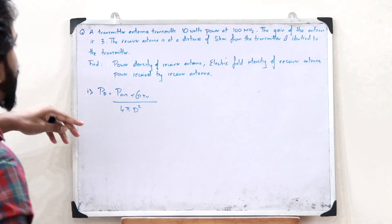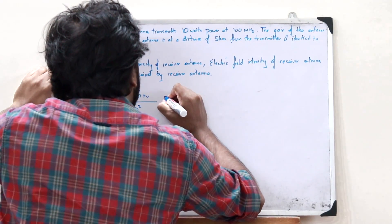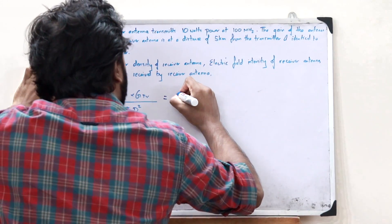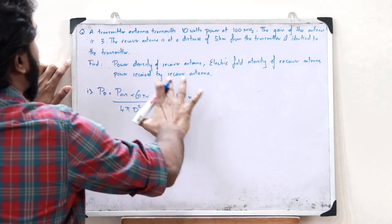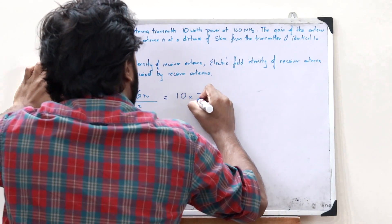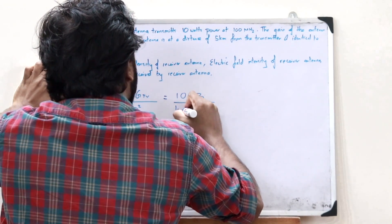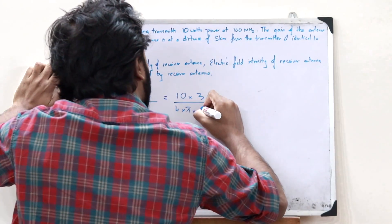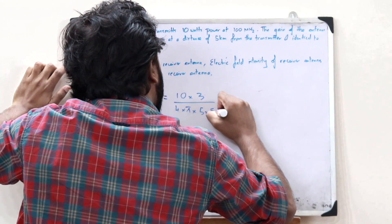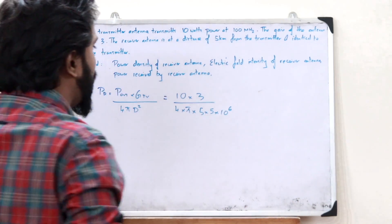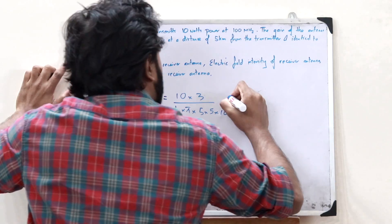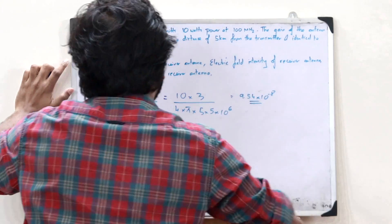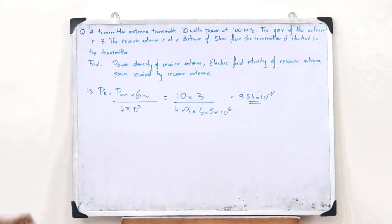The formula for power density is: Pd = (P_out × G_tx) / (4πd²), where d is the distance between the antennas. Substituting: Pd = (10 × 3) / (4π × (5×10³)²) — note that 5 km must be converted to meters. This gives Pd = 9.54×10⁻⁸ W/m².